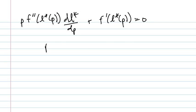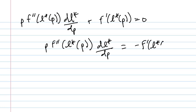So I'm going to get P F double prime of L star of P dL star dP equals minus F prime of L star of P. To solve for dL star dP, we have to know that this thing is not zero. Then we can divide by it. It is not zero if the second order sufficient conditions hold.